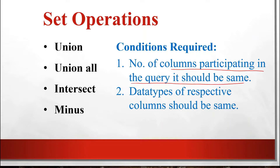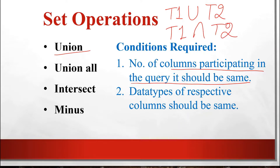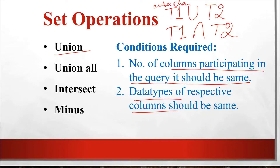The conditions are: the number of columns participating in the query should be the same. These are binary operations — table 1 is unioned with table 2, or table 1 is intersected with table 2. You must choose columns from table 1 and table 2 that are the same in number, same in order, and same in data types. For example, if from table 1 you choose the first column as type NUMBER and the second as type CHARACTER, then from table 2 you must also choose the first column as NUMBER and the second as CHARACTER.